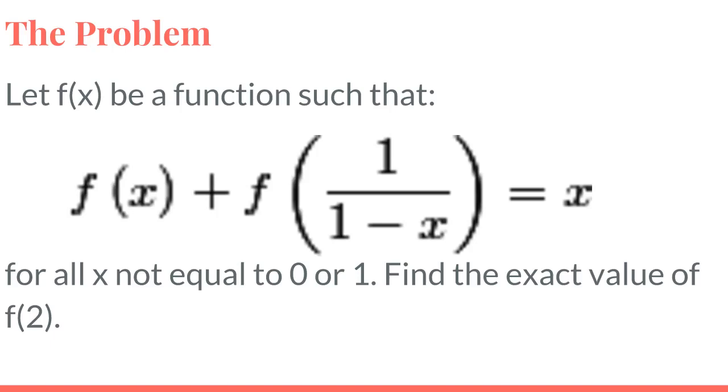Okay, so we're going to be doing problem number 3 on the list which says let f(x) be a function such that f(x) plus f(1 over 1 minus x) equals x for all x not equal to 0 or 1. Find the exact value of f(2).